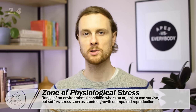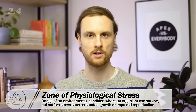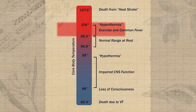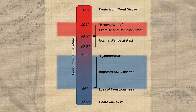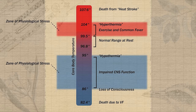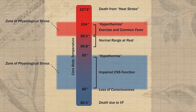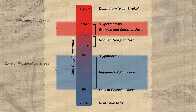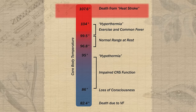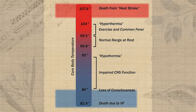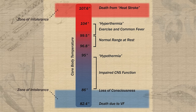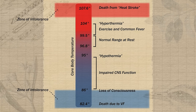If an organism moves outside its optimal range, it enters what's called the zone of physiological stress. For human body temperature, if your body goes above 99.5 or below 95 degrees, you enter a stressed physiological state — you won't think or move as quickly and you can't remain there long without serious consequences. If you move even further from the optimal range — above 106 degrees or below 86 degrees — you leave the zone of physiological stress and enter the zone of intolerance, which quickly leads to death.